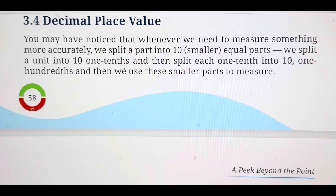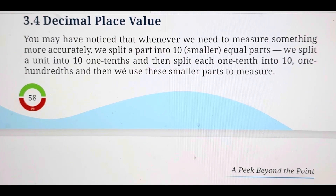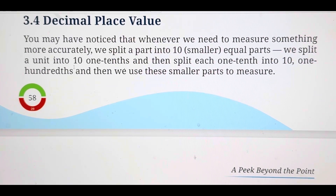In the previous videos we learned about a 10th part and a 100th one. In this video we are going to understand the decimal place value system. You might have noticed that whenever we need to measure something more accurately, we split into 10 equal parts. We saw that earlier. So we split 1 unit into 10 — 1 tenth, that we saw earlier.